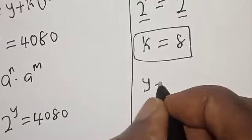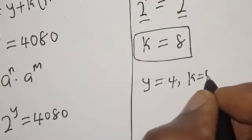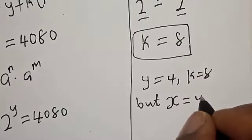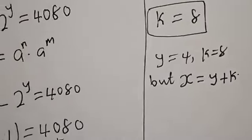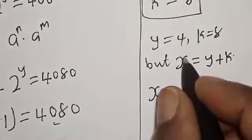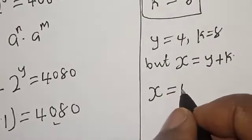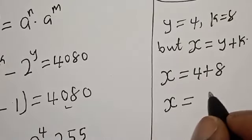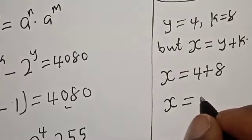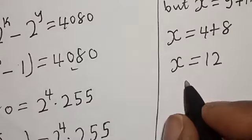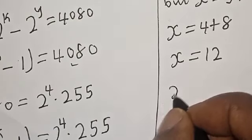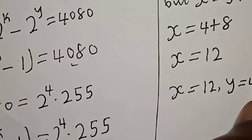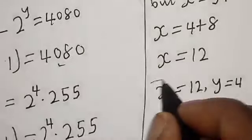Now we have y equal to 4 and k equal to 8. Since x equals y plus k, x equals 4 plus 8, which gives x equal to 12. Therefore our final answer is x equal to 12 and y equal to 4.